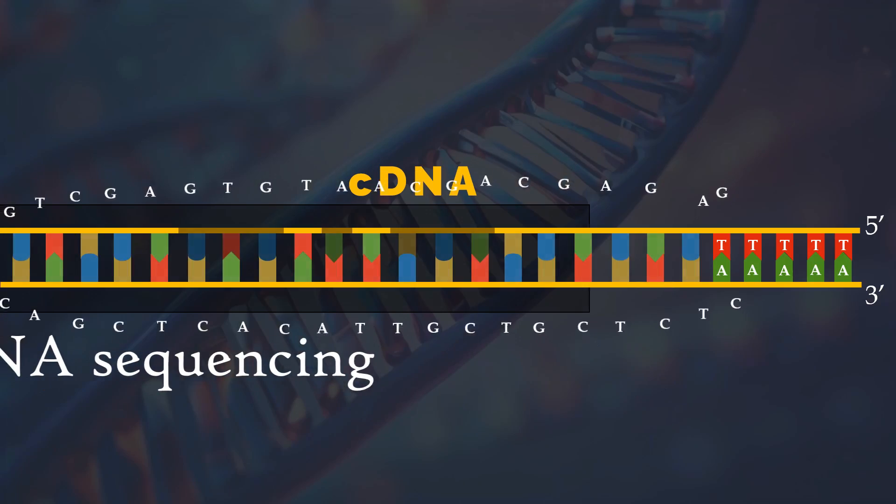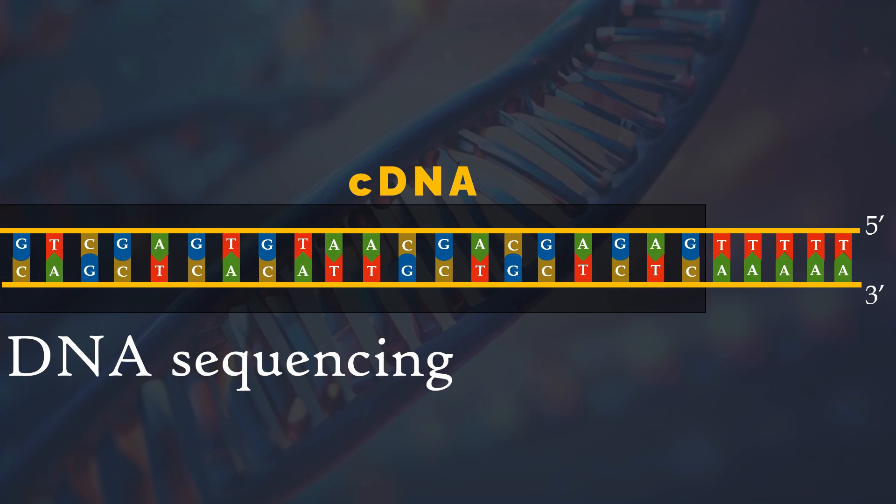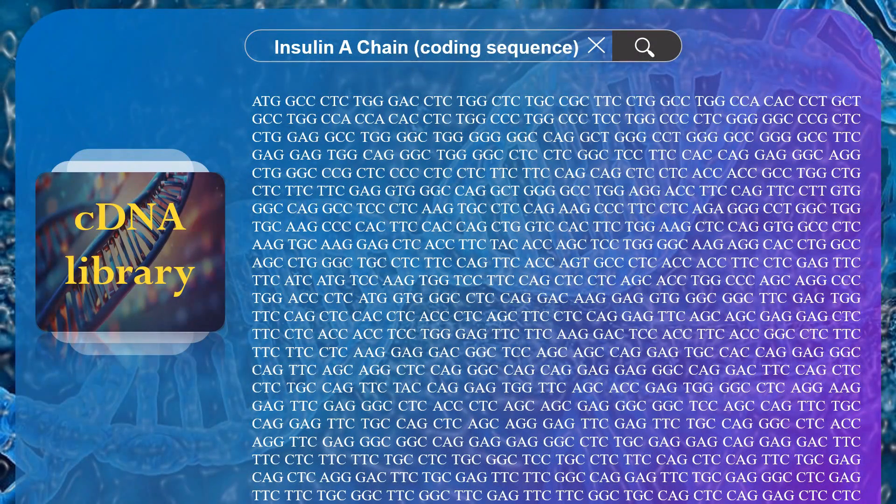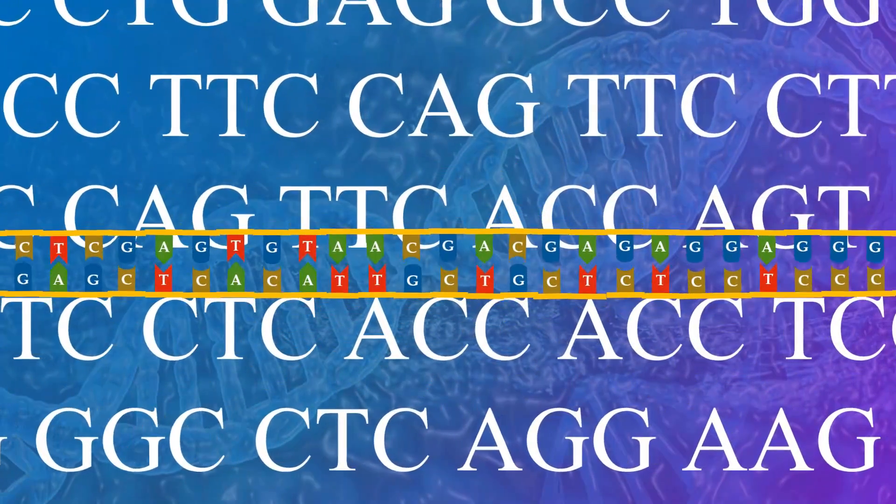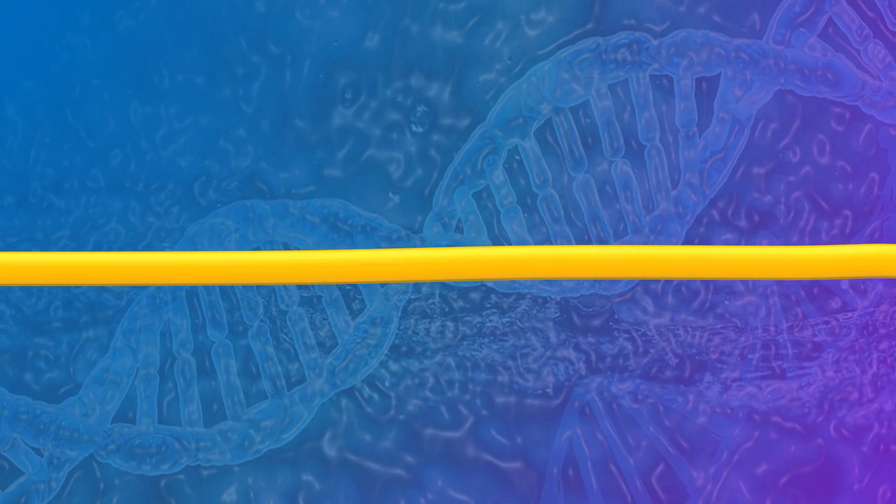Subsequently, sequencing methods are employed to determine the cDNA sequence, which is then incorporated into the libraries. Now, the gene of interest, which codes for a specific protein, can be synthesized.